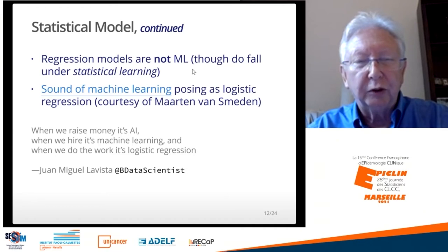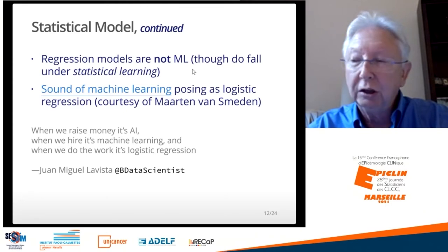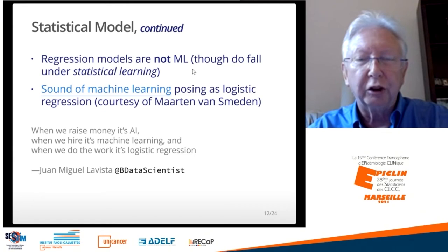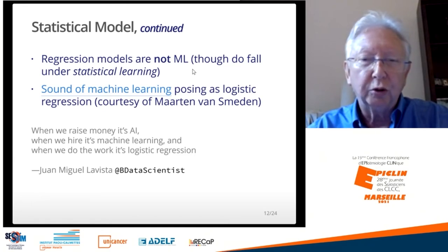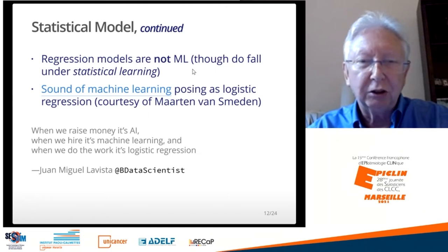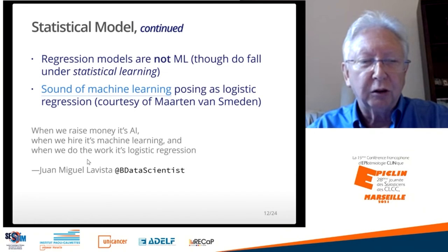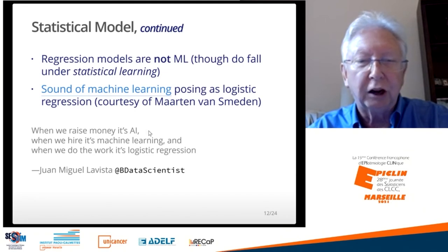As a reviewer for medical journal articles, I see people submitting articles saying they've done machine learning when what they really did was logistic regression — acting as though just using the words 'machine learning' somewhere in the paper causes reviewers to suspend all disbelief and give it an easy peer review. And that is actually what happens in many cases. There's a lot of false advertising. I like this quote: 'When we raise money, it's artificial intelligence. When we hire, it's machine learning. And when we do the work, it's logistic regression.'